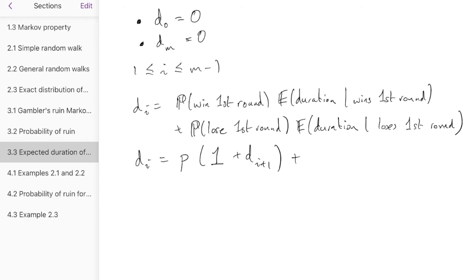Similarly, the probability she loses the first round is q. What's the expected duration given that she loses the first round? It's 1 for the round itself. When you're looking at durations, don't forget to count the step itself. But then she goes down to i minus 1 pounds. By the Markov property, it's like she's starting again.